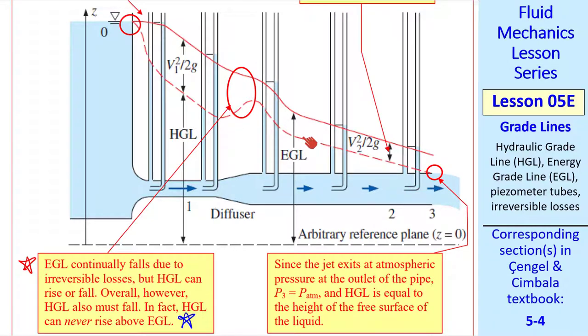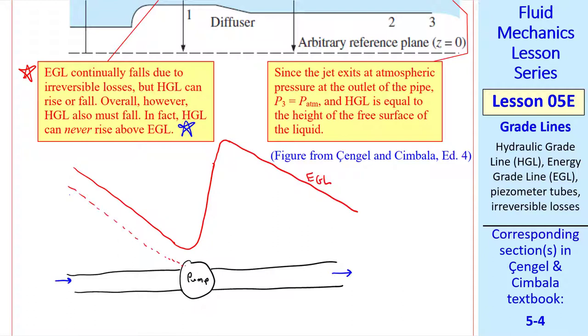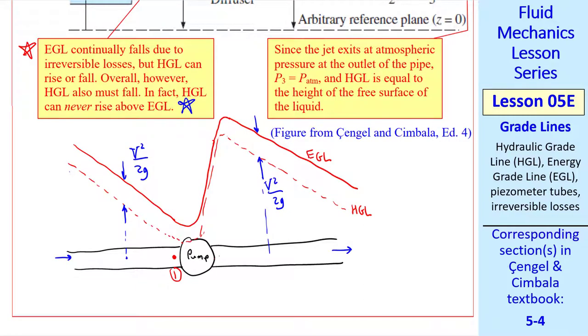In fact, the only way that EGL can rise is if you add some energy to the fluid, for example, by a pump. In this case, the EGL will continuously fall and then get a boost from the pump and then continually fall again. HGL will also fall parallel to EGL, will rise through the pump, and then fall again. At any location, the difference between the EGL and the HGL is V squared over 2G. This is true both upstream and downstream of the pump. Let's call location 1 just upstream of the pump and location 2 just downstream of the pump. You can go back to our head form of the energy equation with the pump term and show that EGL2 equal EGL1 plus H pump U minus HL, which is the head loss between these two locations, not counting pump inefficiencies as per our convention.